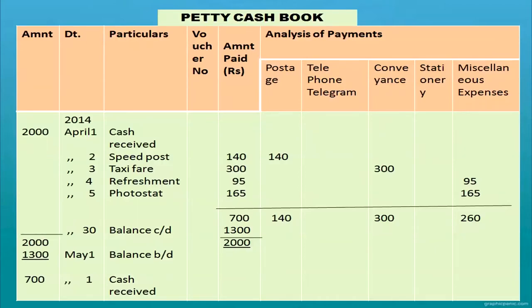Another petty cash book example: cash received is 2,000. Expenses: speed post 140 in the postage column, taxi fare in the conveyance column, refreshment in the miscellaneous expenses column, photostat 165 rupees also in the miscellaneous column. Total all analysis columns and both sides — biggest total is 2,000, total spent is 700 rupees. Balance carried down is 1,300. Balance brought down on May 1st as 1,300. The petty cashier should receive 700 rupees from the main cashier this month.